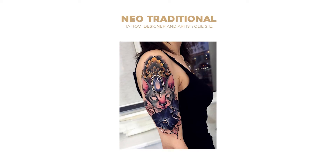Over time, traditional tattoos went on to suffer modifications with different fashions. We start seeing different line widths, more details, more shadows — where before there were much less — and tattoos just became less simple. The themes are similar although they are more diverse. Here you can see a neo-traditional design.